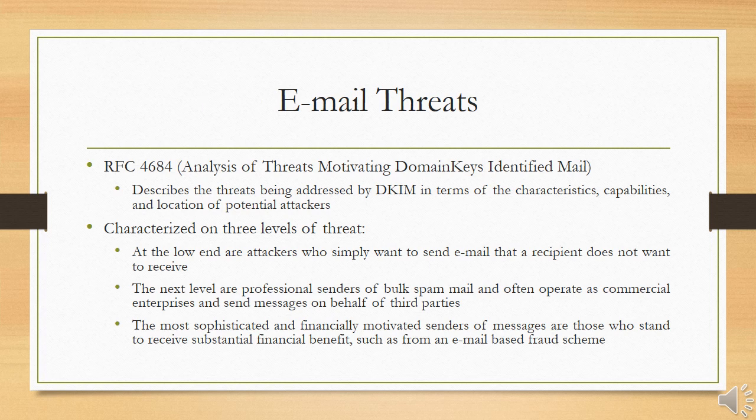Regarding email threats, RFC 4684 — analysis of threats motivating DomainKeys Identified Mail — describes the threats being addressed by DKIM in terms of characteristics, capabilities, and location of potential attackers. Threats are characterized on three levels. At the low end are attackers who simply want to send email that a recipient does not want to receive. The next level consists of professional senders of bulk spam mail who often operate as commercial enterprises and send messages on behalf of third parties. The most sophisticated are financially motivated senders who stand to receive substantial financial benefit, such as from an email-based fraud scheme.